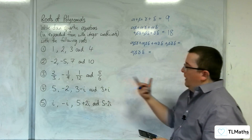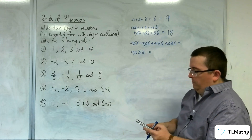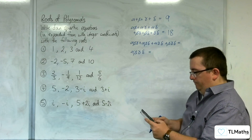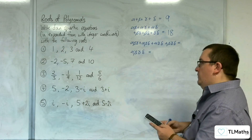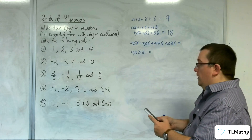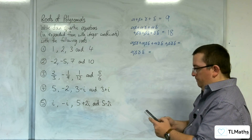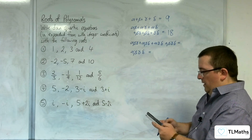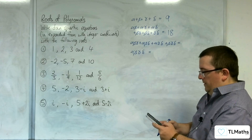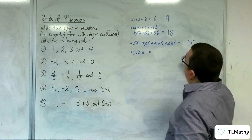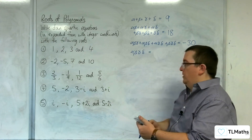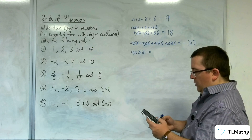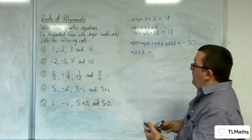Then we've got the product triples. We've got 5 times minus 2 times 3 take away i, then plus 5 times minus 2 times 3 plus i, then the 5 times 3 take away i times 3 plus i, and then finally plus negative 2 times 3 take away i times 3 plus i. And we get minus 30. So then finally, alpha beta gamma delta — the product of the four: 5 times minus 2 times 3 take away i times 3 plus i — and we get minus 100.